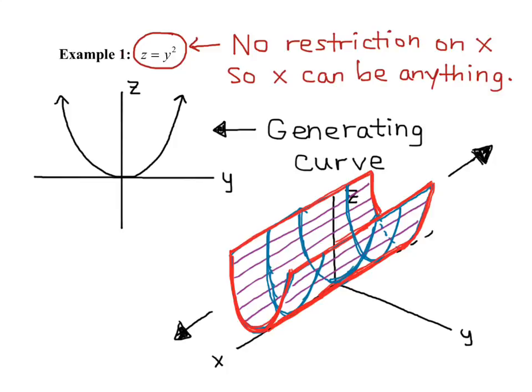So that's the basic idea on how to graph cylinders, which are any function in three dimensions that are missing a variable, or only have two variables present. Let's look at one more example of cylinders.